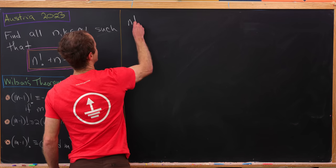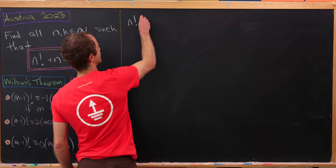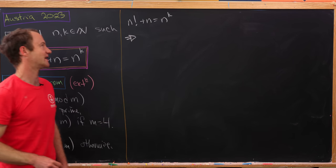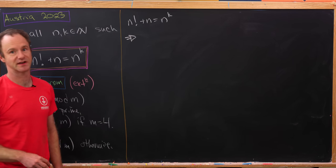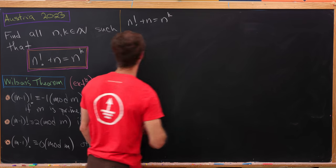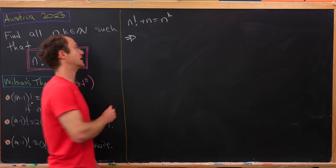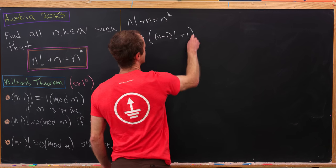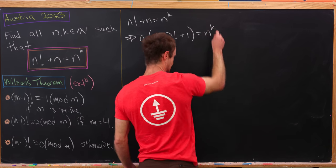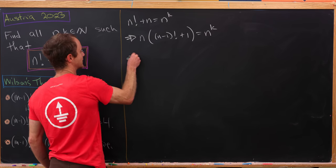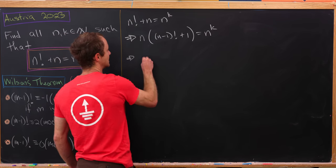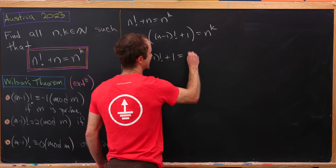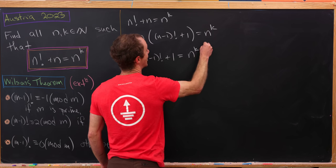Starting with the equation n! + n = n^k, we can factor an n out of the left-hand side, giving us n times ((n-1)! + 1) = n^k. Dividing both sides by n leaves us with (n-1)! + 1 = n^(k-1).